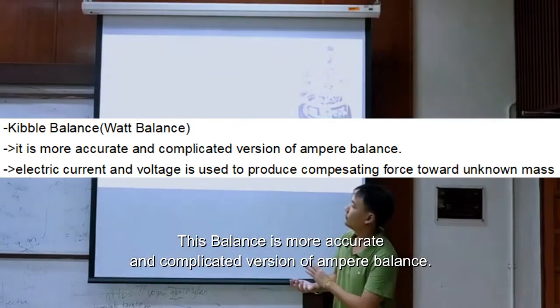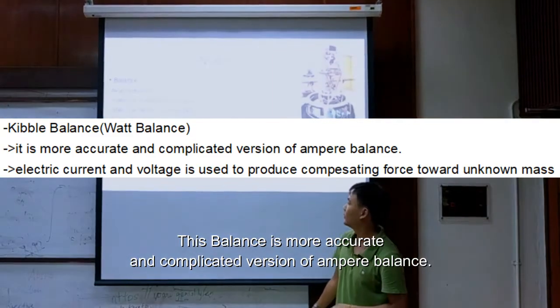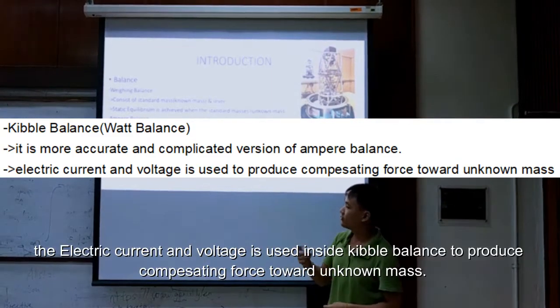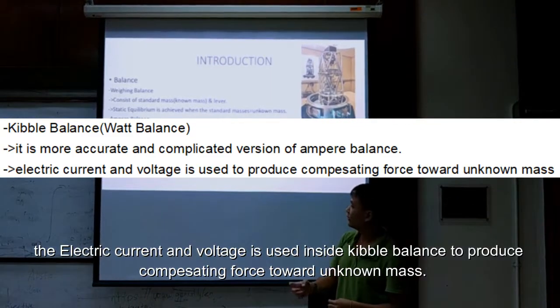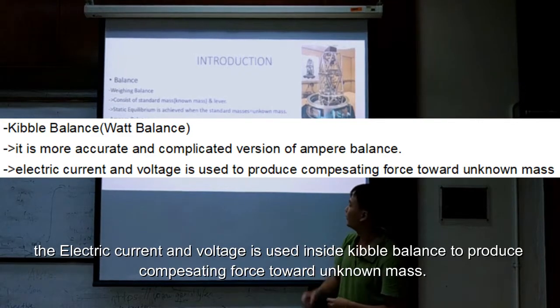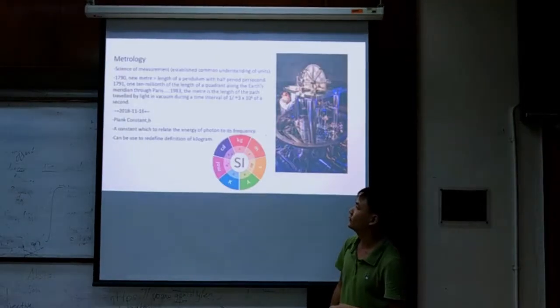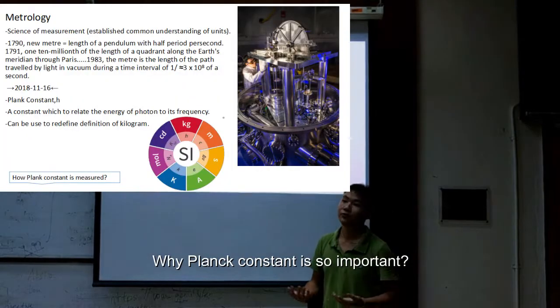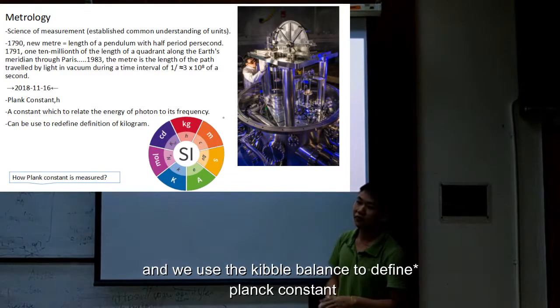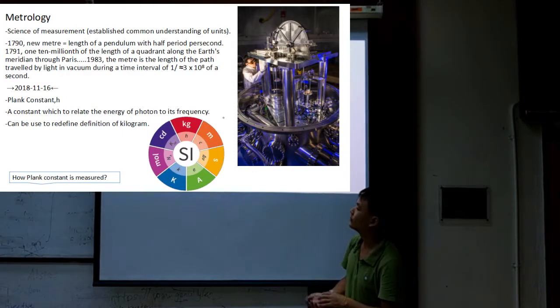This balance is a complicated version of ampere balance. The electric power and voltage are used inside the Kibble balance to produce control of the electromagnetic force. Why is Planck's constant so important when we use the Kibble balance to measure the current and voltage?